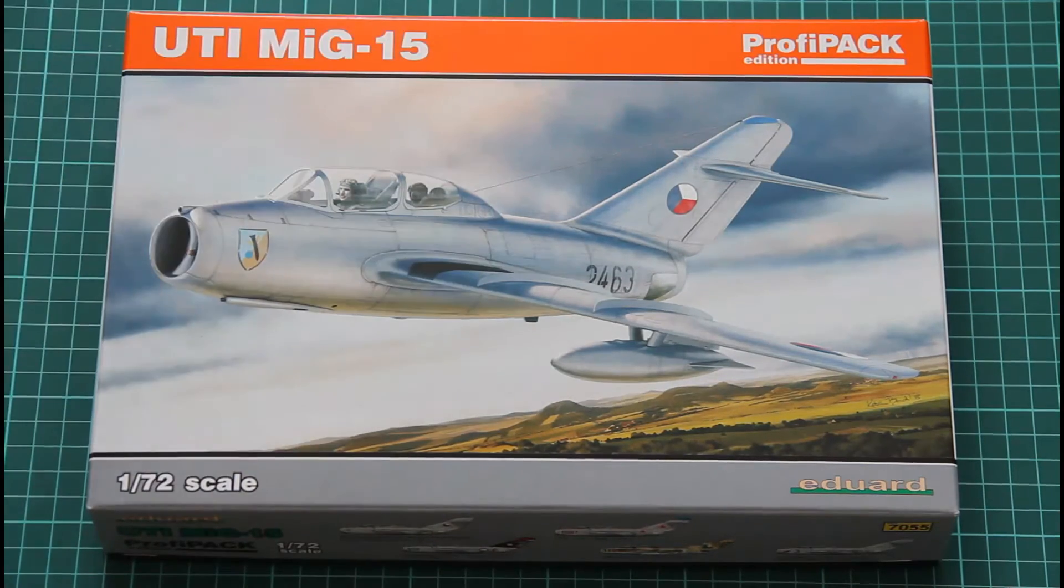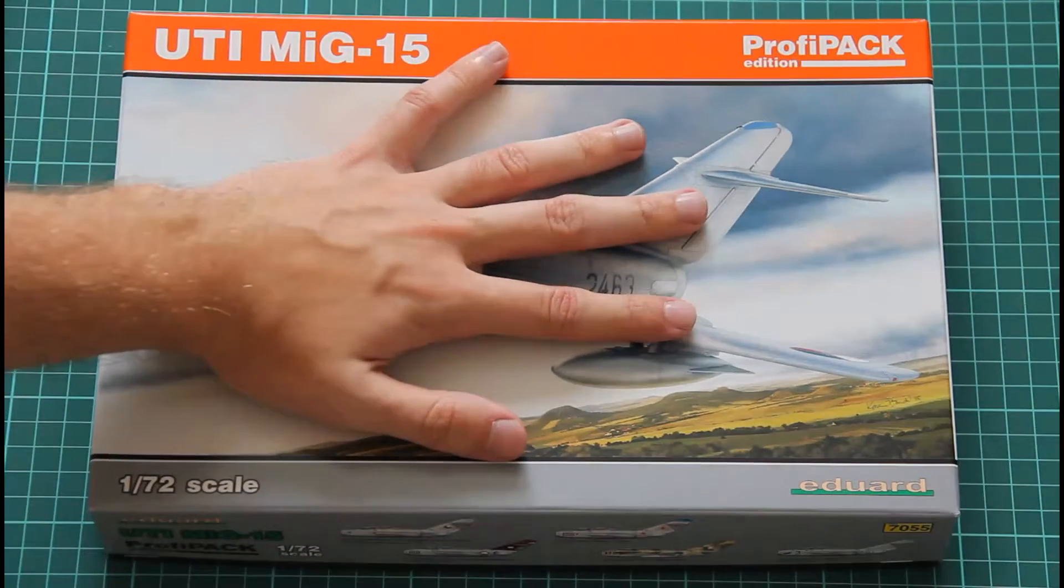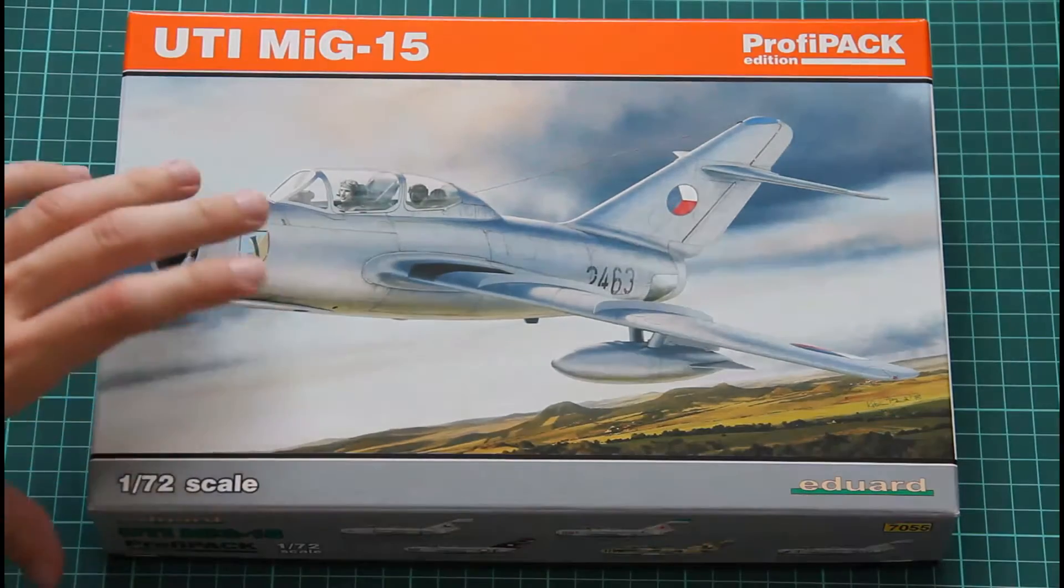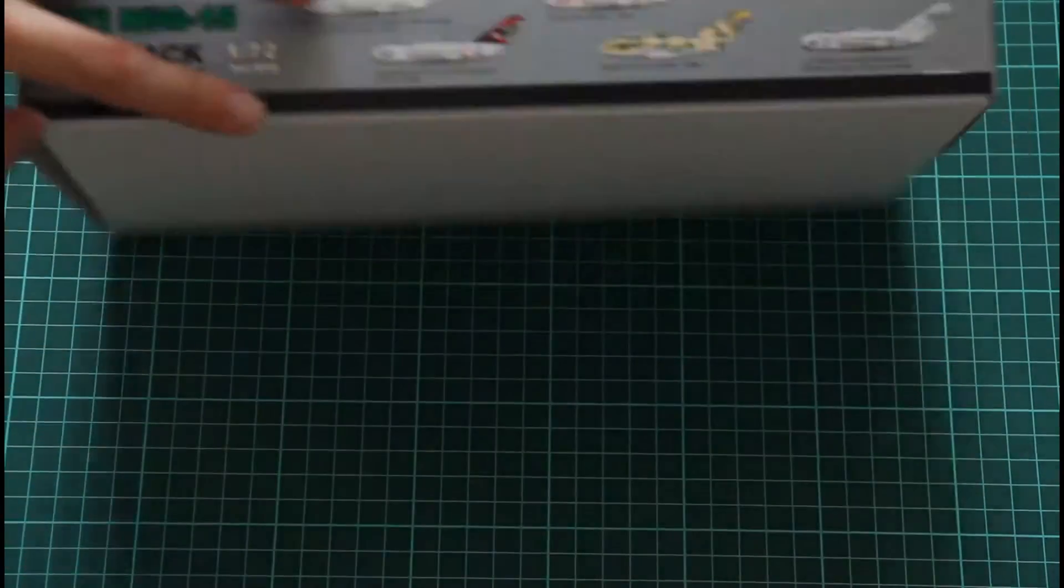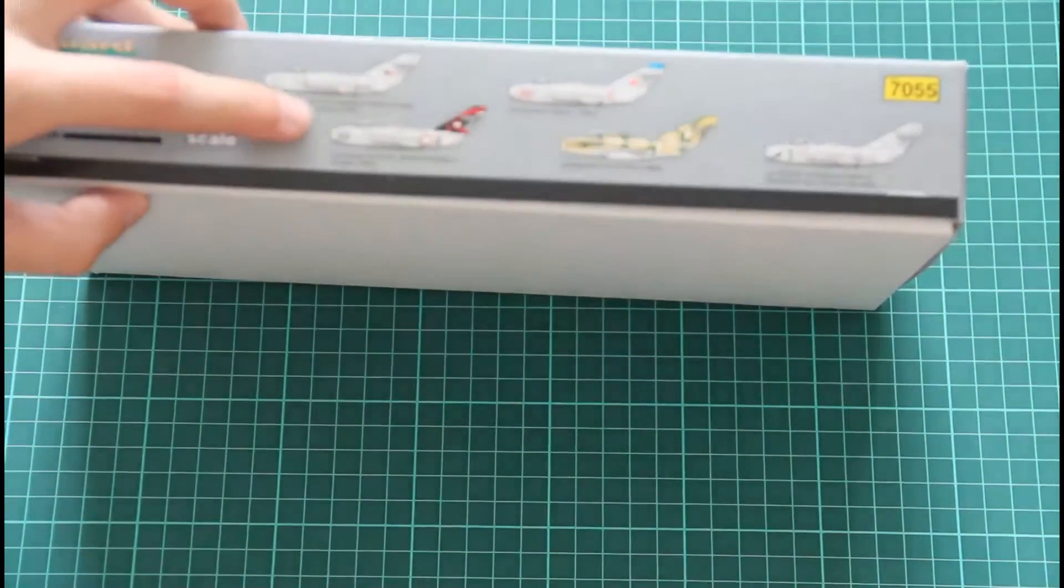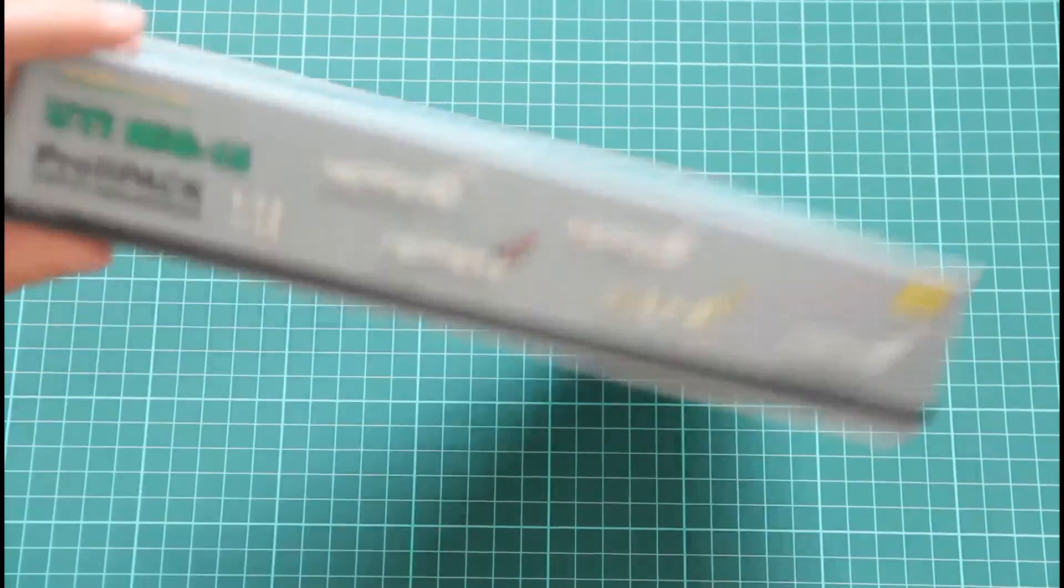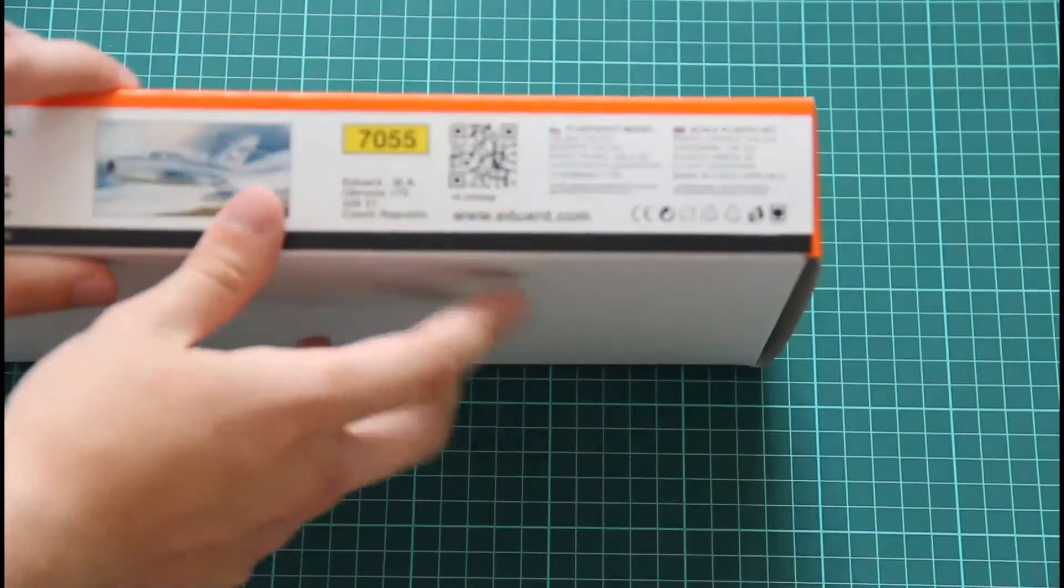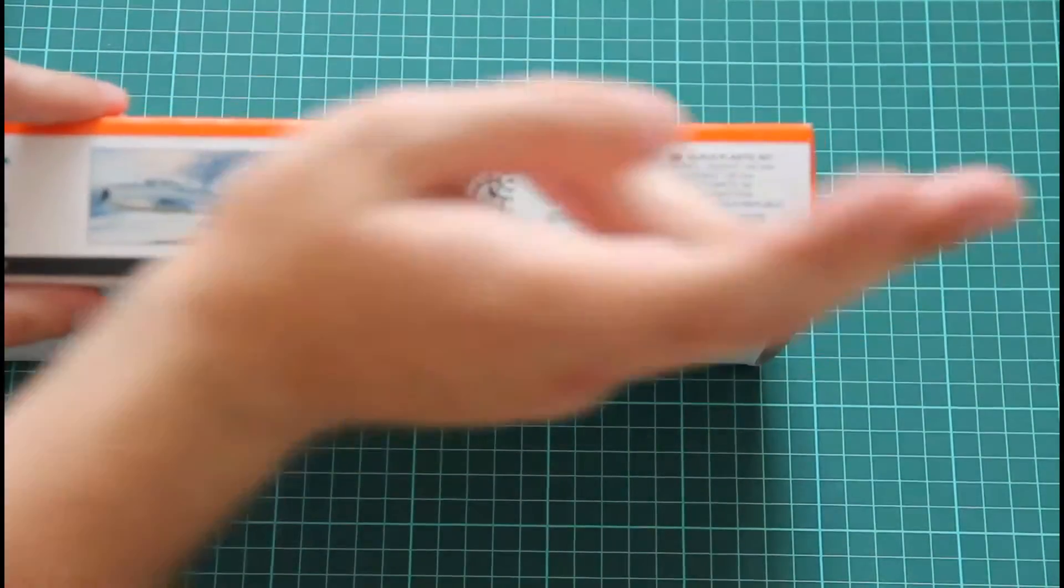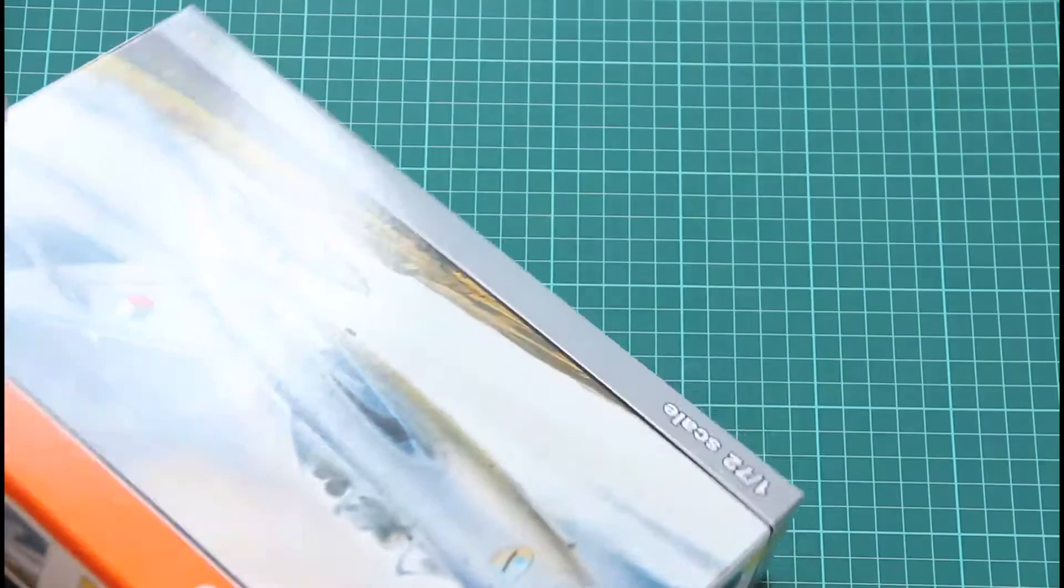So as you can see we have this nice small box here, you can see comparison with my hand, it's not that big. On the side we have five marking options shown that are included into this kit and on the other side there is some basic information about the kit that model will be assembled from 62 parts.